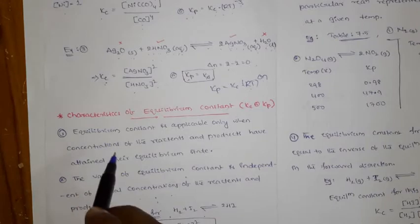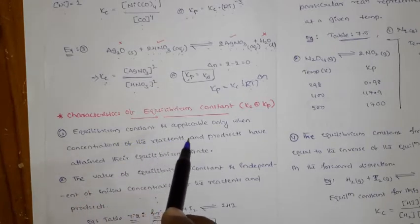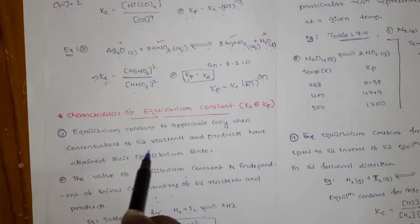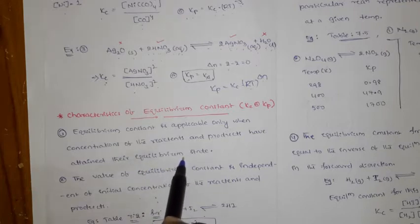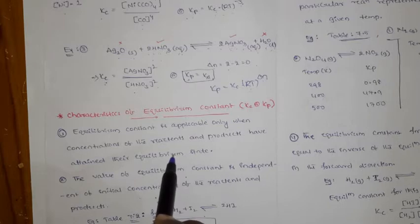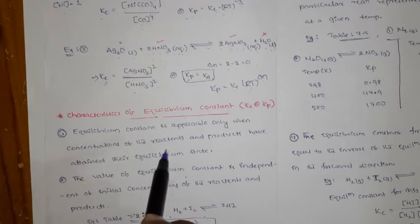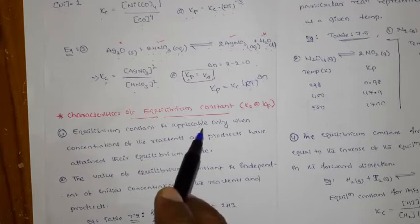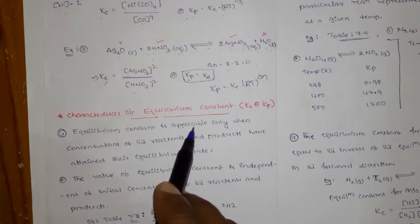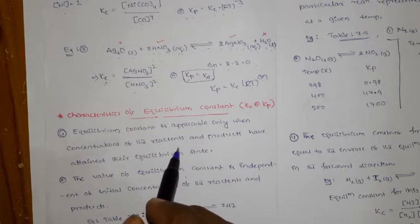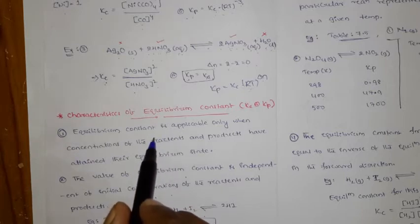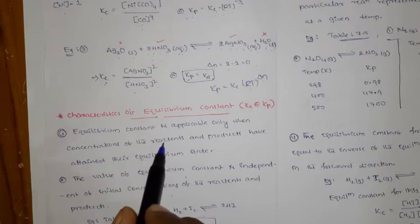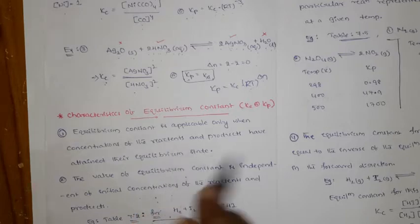The first characteristic: the equilibrium constant is applicable only when the concentrations of the reactants and the products have attained their equilibrium state. The mandatory thing is that the reaction should attain equilibrium first. Then only we can measure the equilibrium constant.